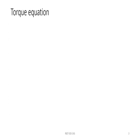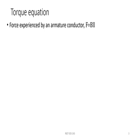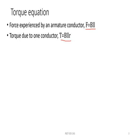Now let's derive the equation for torque developed. Force experienced by an armature conductor in the DC motor is given by the expression F equal to BIL, where B is the flux density, I is the current through the conductor, and L is the length of the conductor. Torque due to one conductor is equal to force into radius of the armature core, that is R. So the torque expression becomes T equal to BIL into R.